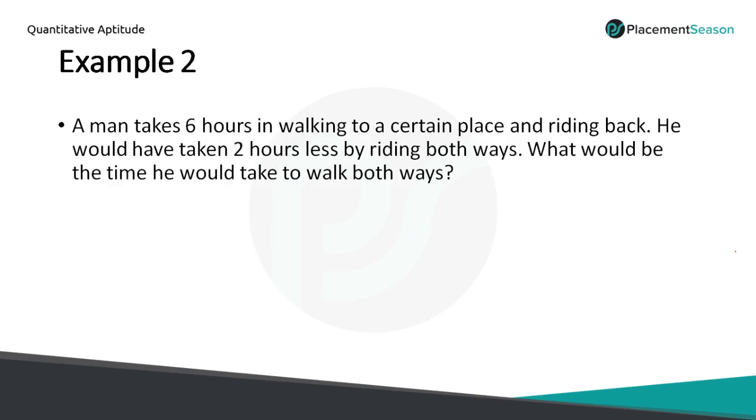Let's look at another example. A man takes 6 hours in walking to a certain place and riding back. So there are two places, A and B. A man starting from A and reaching B by walking. And from B to A he is riding. So total he took 6 hours to complete this.